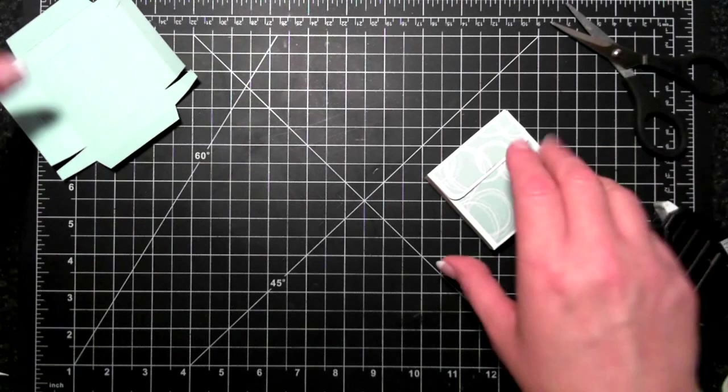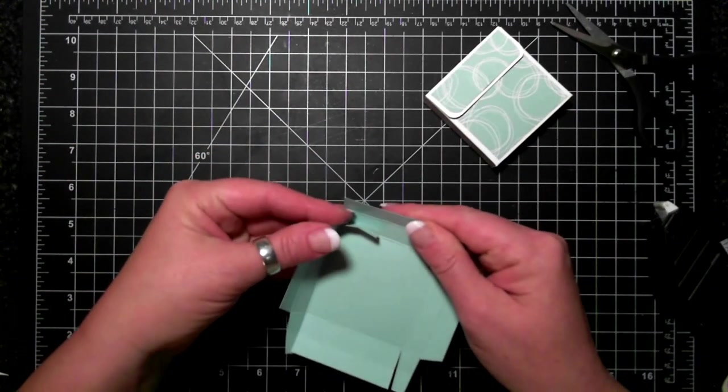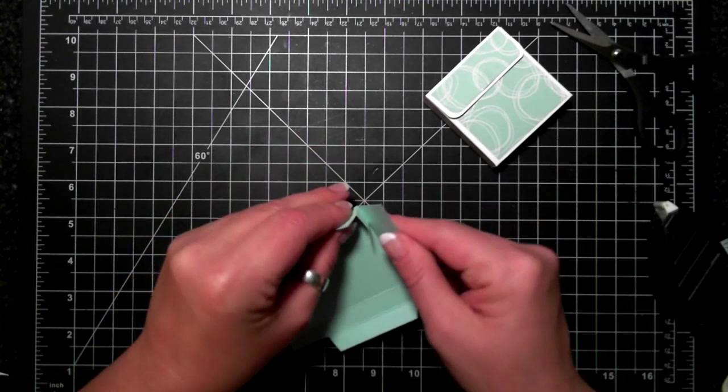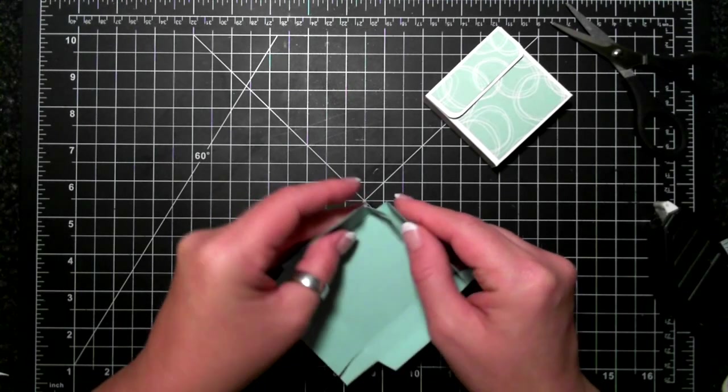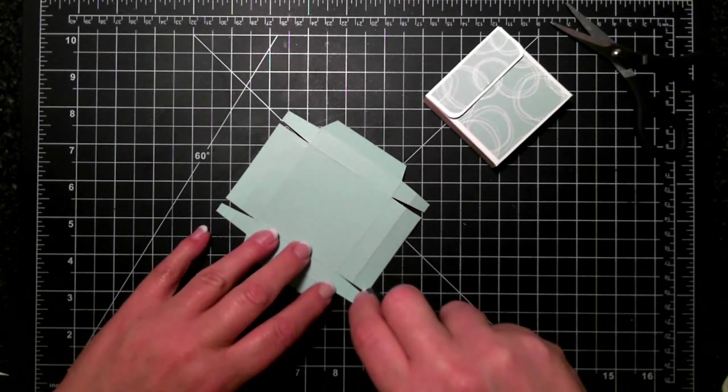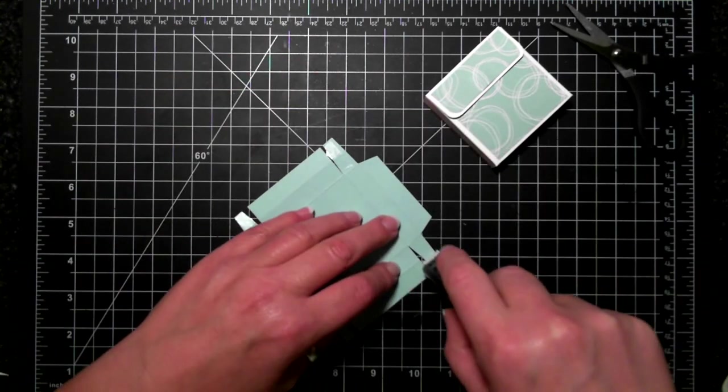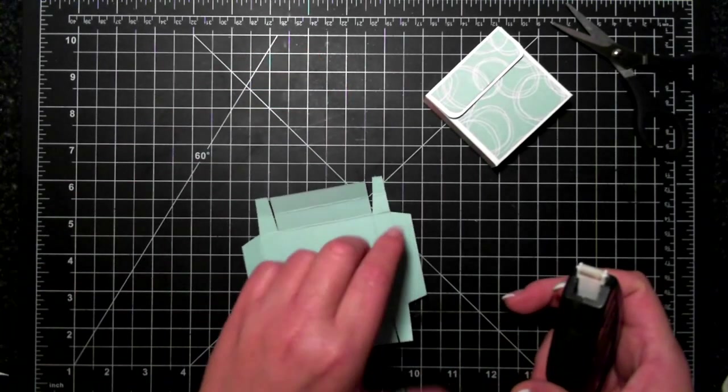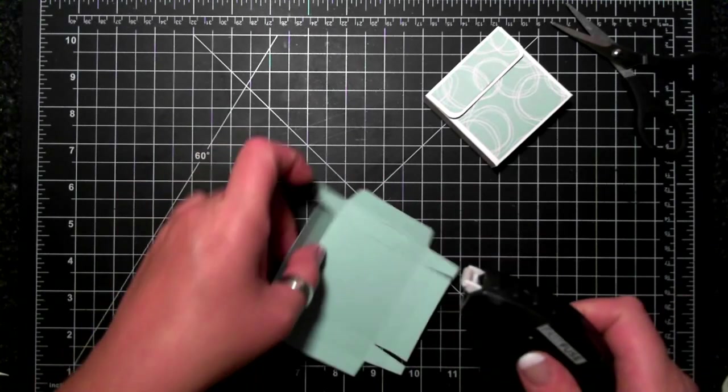Now for this, basically this is going to go in like such. These little tabs, that's the reason why I didn't cut them, because it just gives it extra strength. This is going to be folded down and this is going to be folded down. So we're going to put fast fuse on all of these little tabs.